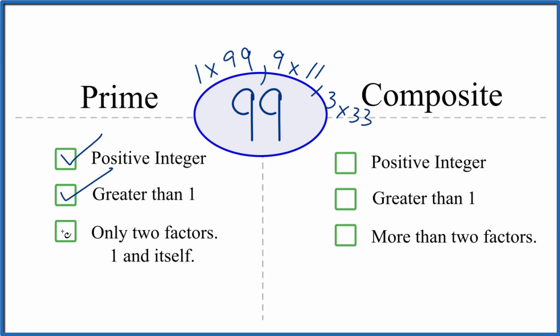So we have more than two factors. So 99 is not a prime number. But is it a composite number? Positive integer? Greater than 1? More than two factors? Yep.